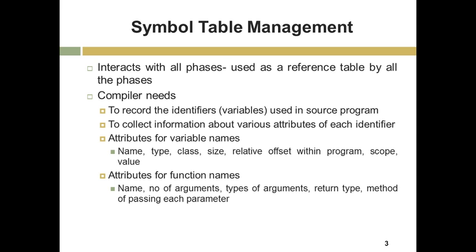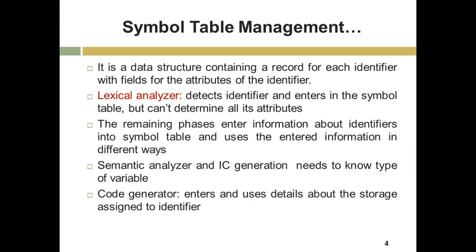The attributes for function names are: name of function, number of arguments, types of arguments, return type of the function, and method of passing each parameter — whether it is call by value, call by address, or call by reference. Hence, for this purpose, a symbol table is designed, that is a data structure containing a record for each identifier with the fields for the attributes.